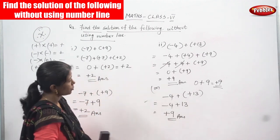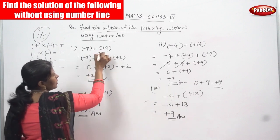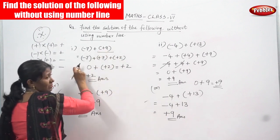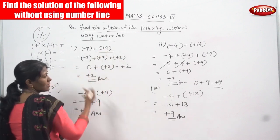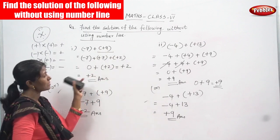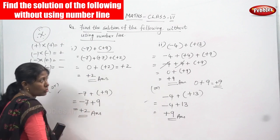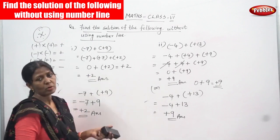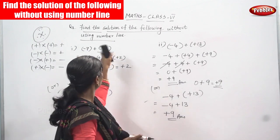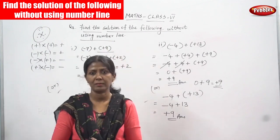Whichever method is convenient for you — in the first method you have to split the positive number according to the negative integer, which may feel a little difficult. So you can take the second method instead. Choose whichever method is convenient for you. I think you understand how to find the solution of the following without using a number line.